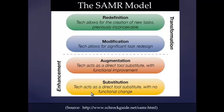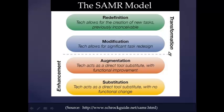This is a picture of the model. As you can see, there are four levels, and the most important part to be aware of is this line here, which I will refer to shortly. Below the line is using technology to enhance the learning experience and the tasks that you can design as a teacher, while above that line is transforming what learning tasks can be designed. Substitution is where technology acts as a direct tool substitute with no functional change.